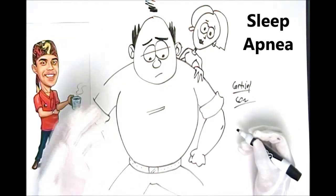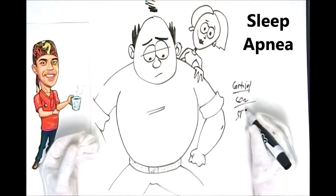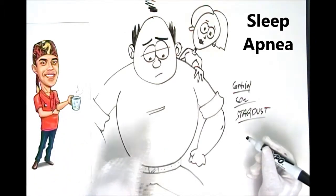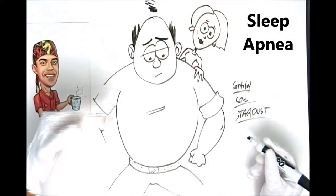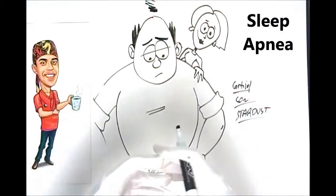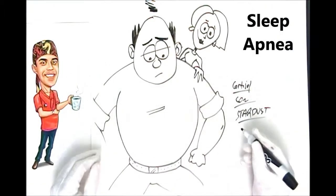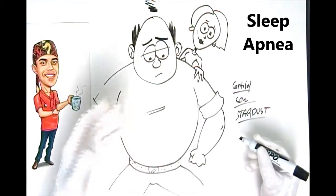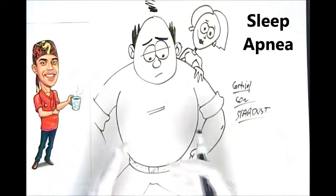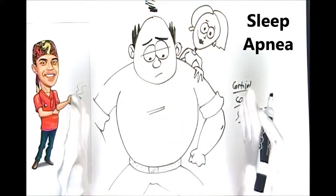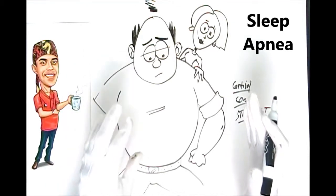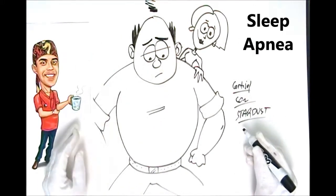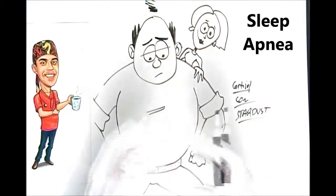To diagnose it, we typically send you for something called a Stardust study. What that entails is hooking you up to equipment overnight to monitor your oxygen saturation and see how it fluctuates, and also to check your chest excursion to see if you're pausing breathing. They may also check your pulse rate and blood pressure. At the end, they produce a statistical representation of your sleep over that eight-hour span — how many pauses, how long, how severe, and how low the oxygen saturation dropped.